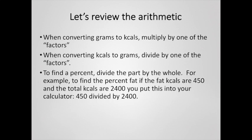As a summary of this process: if you're trying to convert from grams to calories, you multiply by the factor — four or nine calories per gram. When converting from calories to grams, you divide by the factor. To find a percent, you divide the part by the whole — so if you know there are 450 calories from fat and a total of 2400 calories, you divide 450 by 2400.